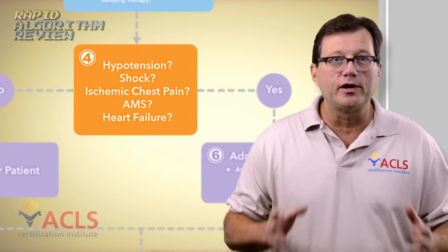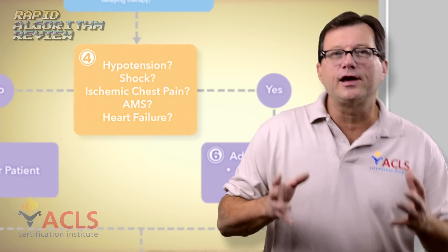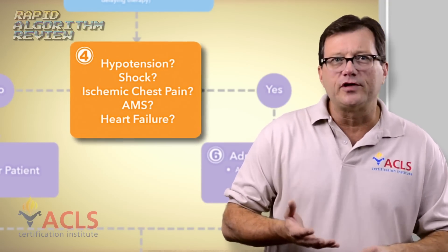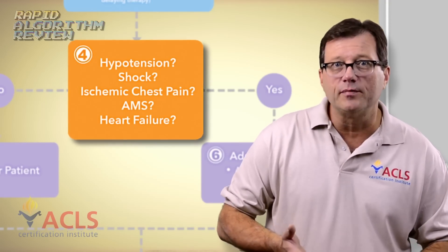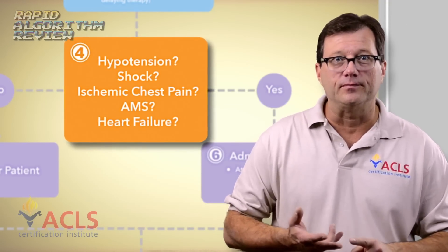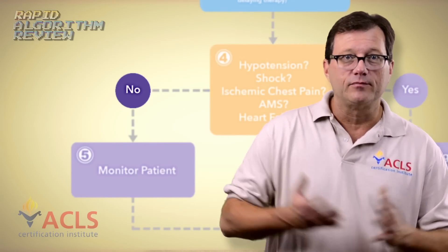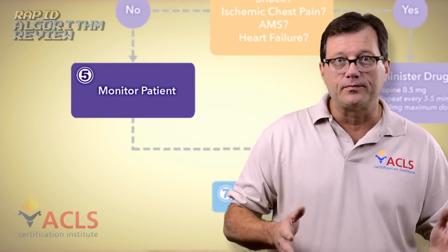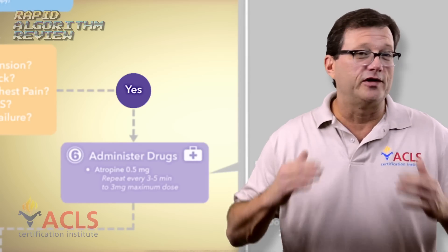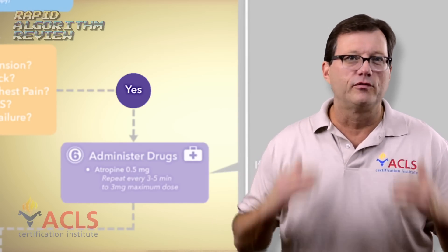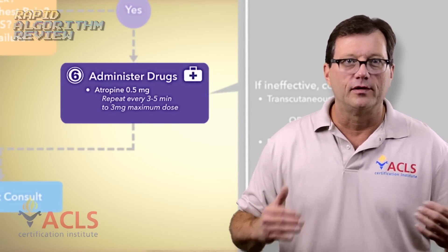Next, is there persistent bradycardia? We're looking for signs of shock: hypotension, altered mental status, poor perfusion. If the patient doesn't have these, you're fine — monitor your patient. If yes, the patient is showing signs of shock, we're moving right into drugs.